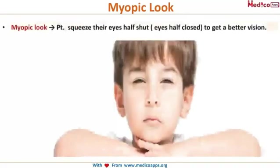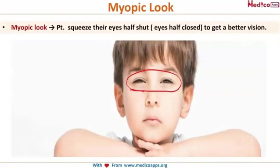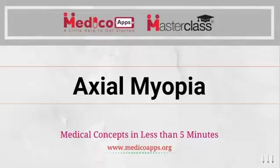This is how the typical eyes of a myopic patient appear. The patient squeezes their eyes into half-shut to get better vision, in an attempt to focus the image on the retina. This squinting is a typical look of a myopic patient.